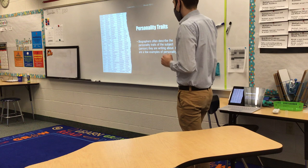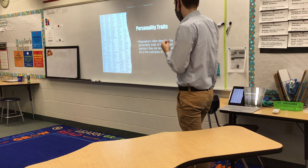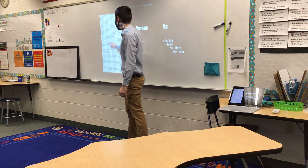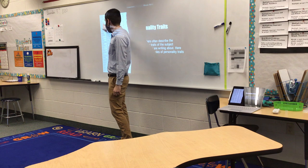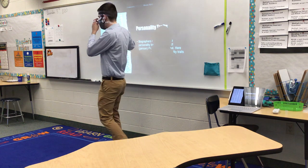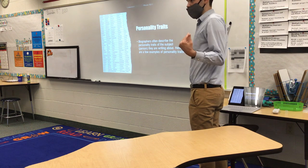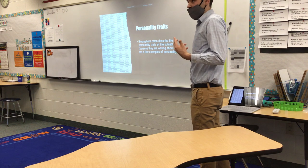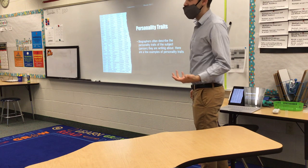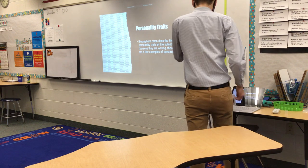So, personality traits. Biographers often describe the personality traits of the subject or person they are writing about. Here are a few examples of personality traits: persistent, perceptive, diligent, affectionate, agreeable, ambitious, dynamic, easygoing. Those are all examples of character traits. You yourself have character traits. Everybody here is a little different. We all have some character traits in common, but we also have some that are not. Maybe some of us are patient and others are impatient. Maybe some of us are organized and some are unorganized. So we've got these kinds of personality traits that go with us.